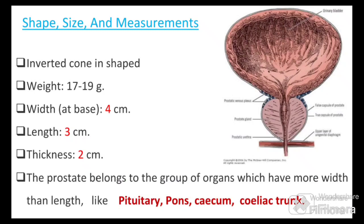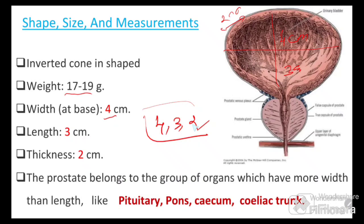The shape of the prostate is an inverted cone. It weighs about 17 to 19 grams. Width is 4 cm, length is 3 cm, and thickness is 2 cm — remember 4-3-2. This is one of the organs where width exceeds length. Other organs wider than they are long include the pituitary gland, bones, cecum, and celiac trunk.